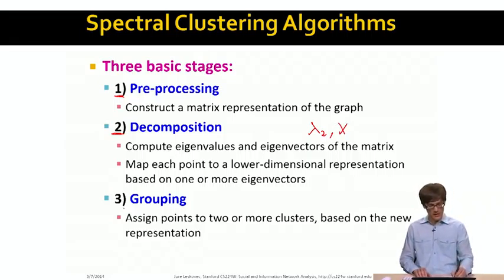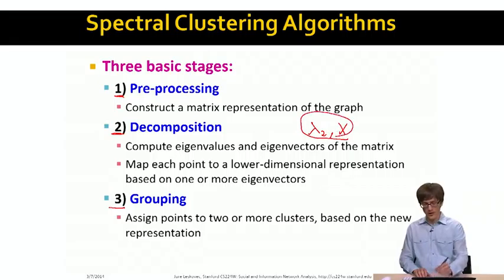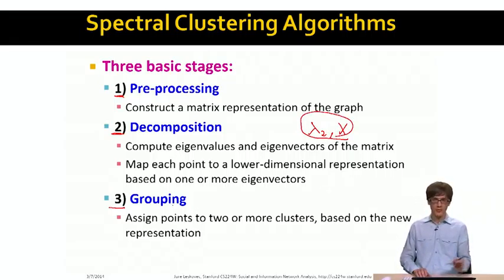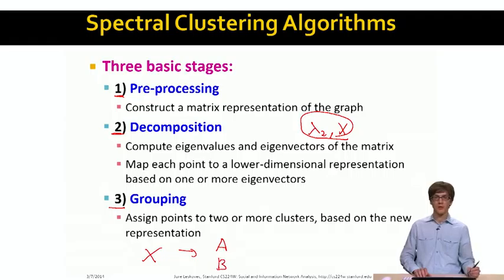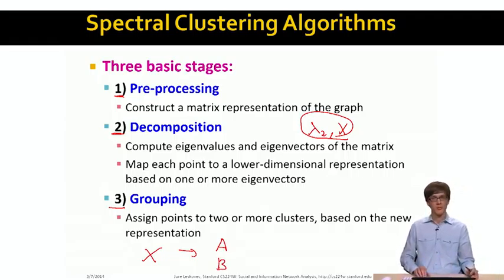Once we have the vector x, all we have to do is the grouping, where we look at the components of x and determine which nodes belong to set A and which nodes belong to set B — kind of who belongs to the left partition and who belongs to the right partition.